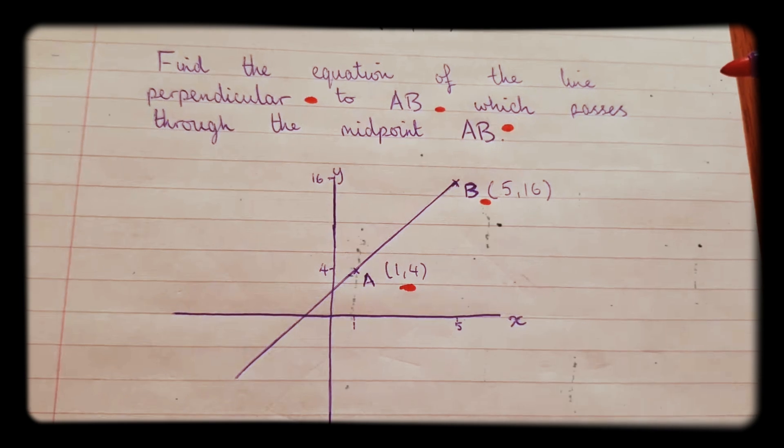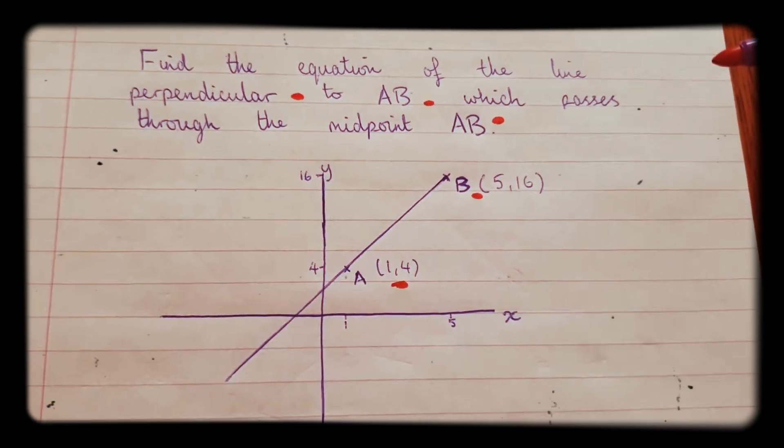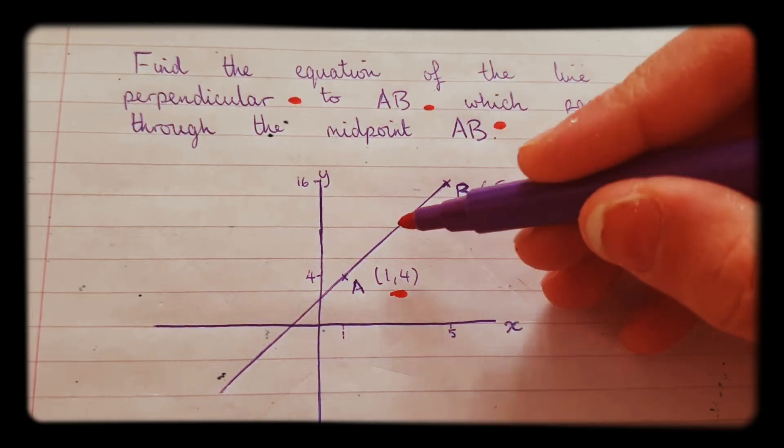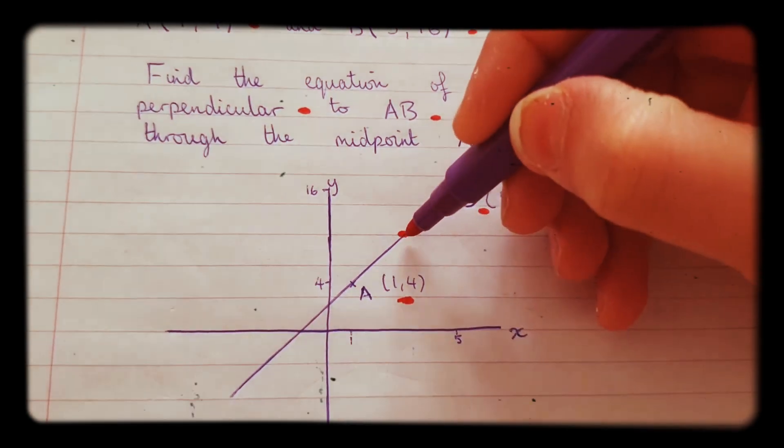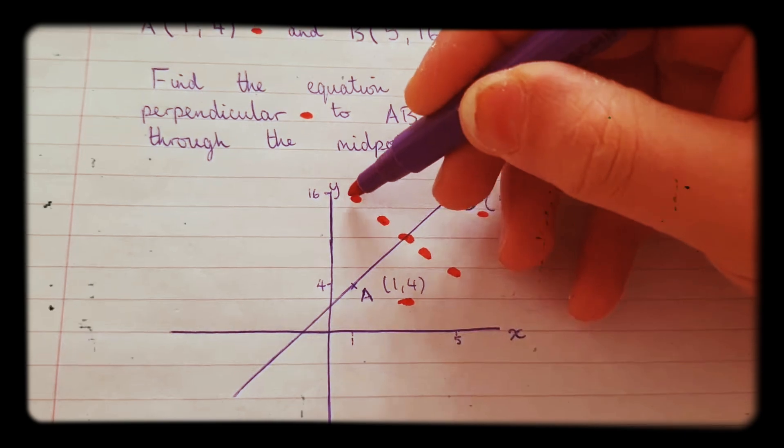So what we're looking for is a line that's perpendicular to AB and which also passes through the midpoint of AB. So here is the midpoint of AB there, and this line has to be perpendicular to it. So it's going to look something like that.